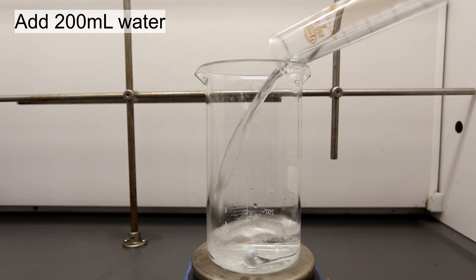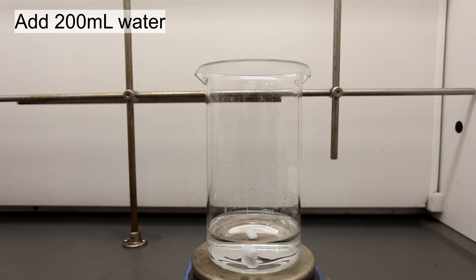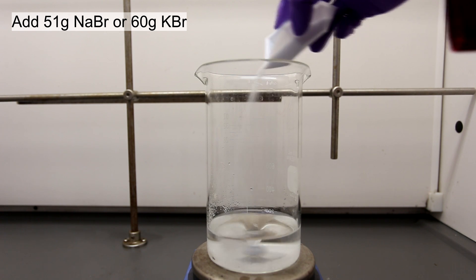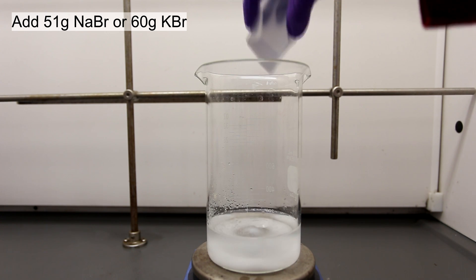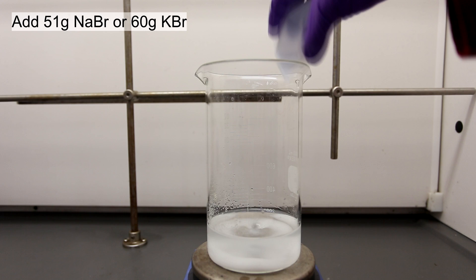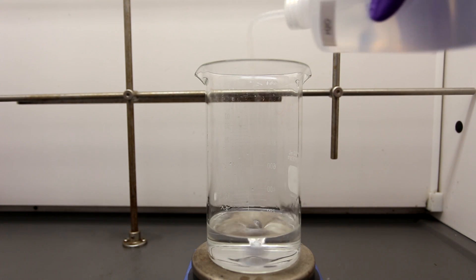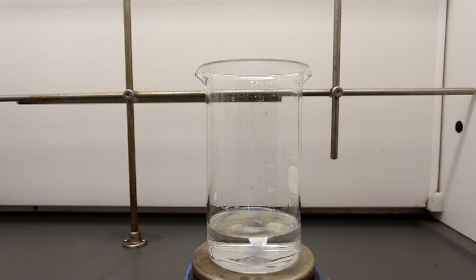First, add about 200 milliliters of water to a beaker, followed by 51 grams of sodium bromide or 60 grams of potassium bromide depending on what you choose to use. I stirred the solution until it was clear and washed the sides with a small amount of water using a wash bottle.